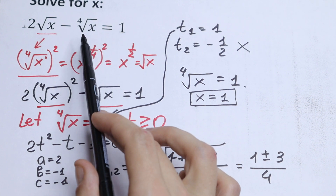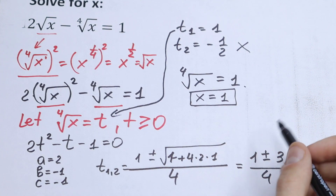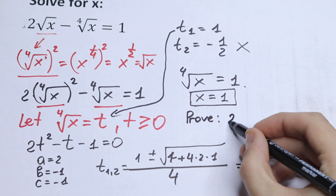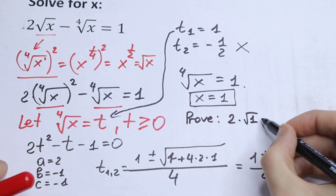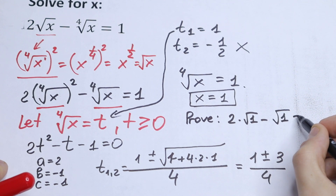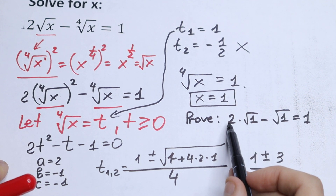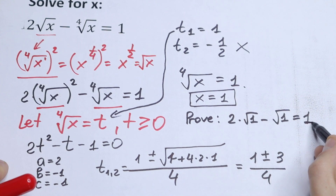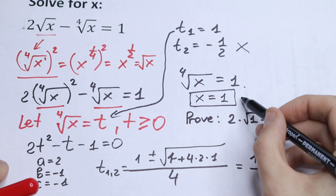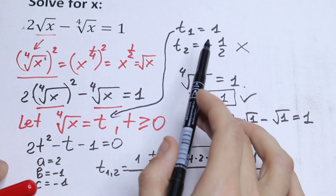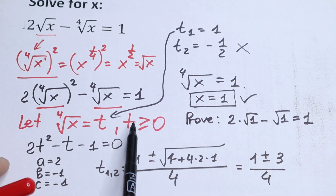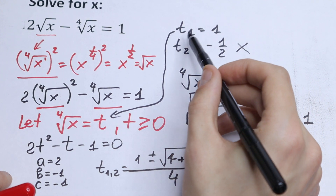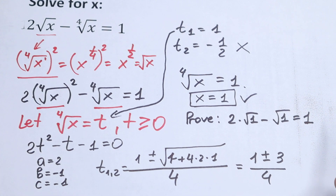Let's verify by plugging x equals 1 back in. We get 2 times the square root of 1 minus the fourth root of 1 equals 1. That gives 2 times 1 minus 1, which equals 1. This checks out, so x equals 1 is confirmed as the correct root.